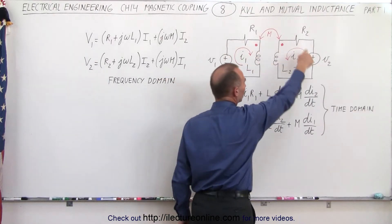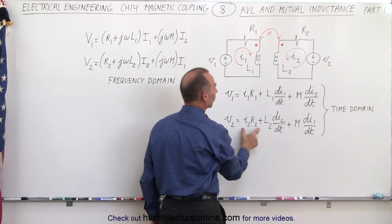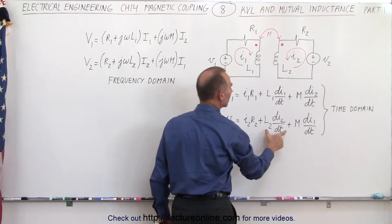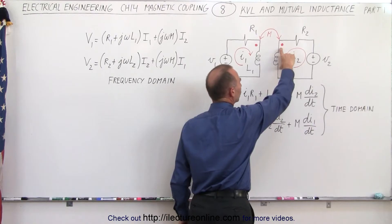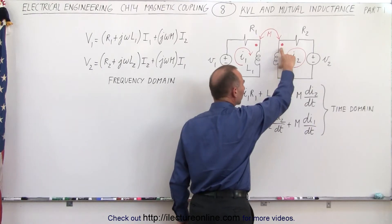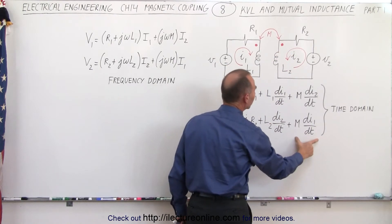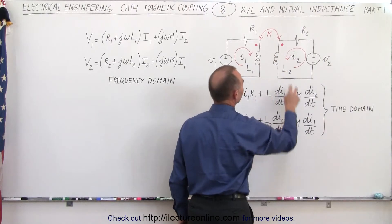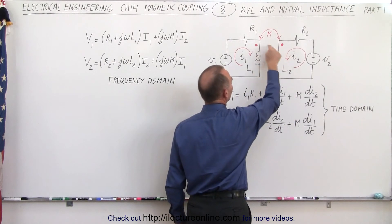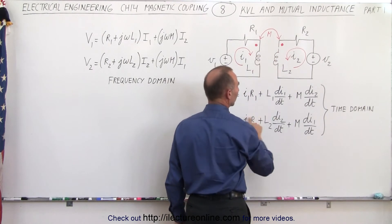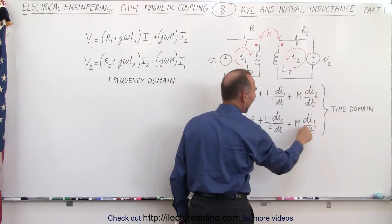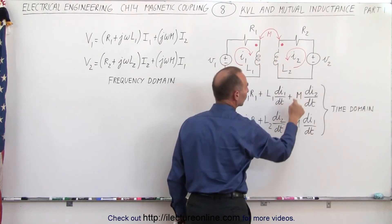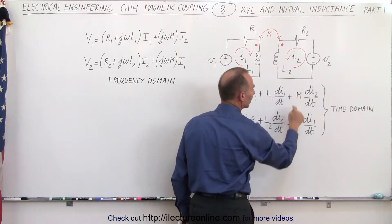The same applies when we go around the second circuit. It's going to be the sum of the voltage drop across the resistor, the voltage drop across the inductor due to self-inductance, plus the voltage drop across the inductor due to the mutual inductance. Since the coupling here is the same on the same side of the inductor, we must add the term. If the dots are on opposite sides, then we subtract these terms.